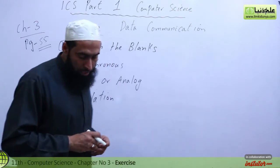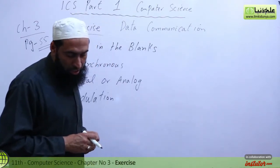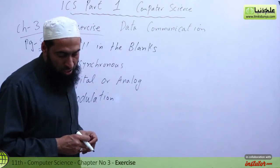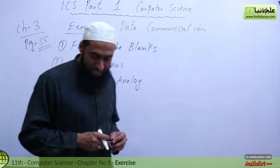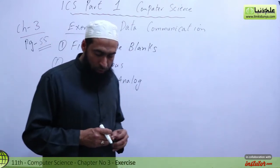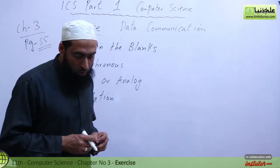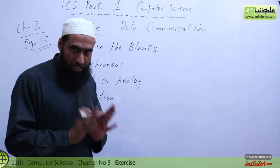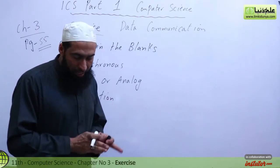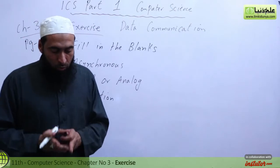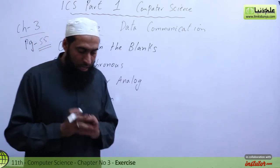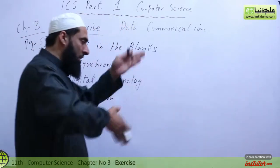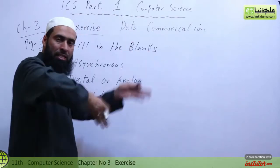Number 4: The blank transmission involves the concurrent flow of bits of data through separate communication lines. The answer is parallel transmission. Parallel transmission involves the concurrent flow of bits of data through separate communication lines.